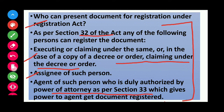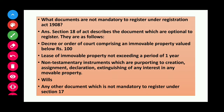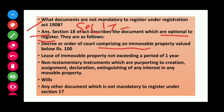What documents are not mandatory to register under the Registration Act 1908? Section 18 provides documents which are optional to register: decree or order of the court comprising immovable property valued below ₹100; lease of immovable property not exceeding one year; non-testamentary instruments purporting to create, assign, declare, or extinguish any interest in immovable property; wills; and any other document not mandatory under Section 17.